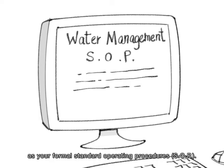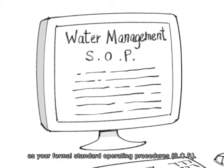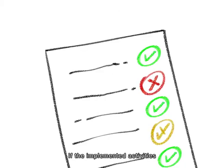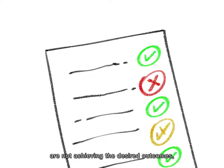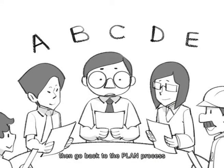If the implemented activities are not achieving the desired outcomes, then go back to the plan process and determine if different activities must be tried.